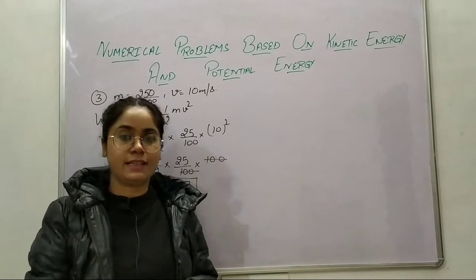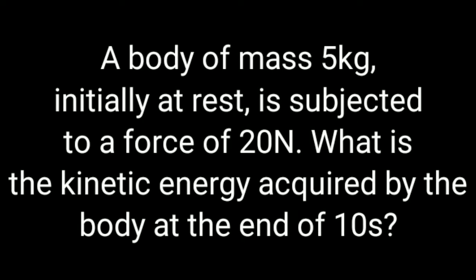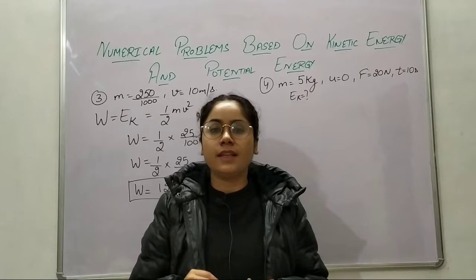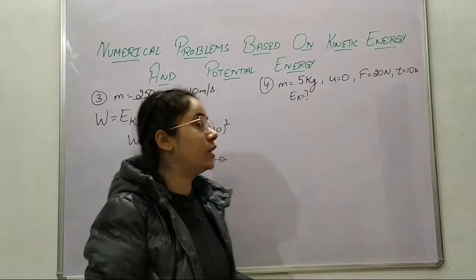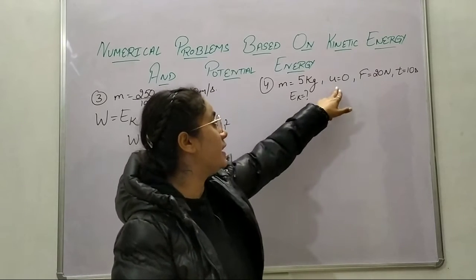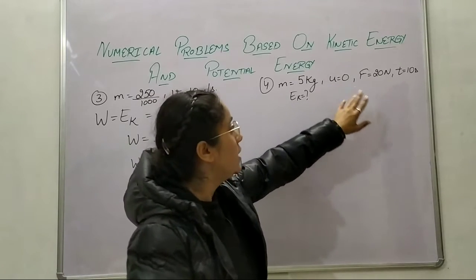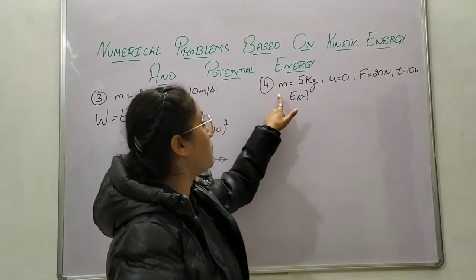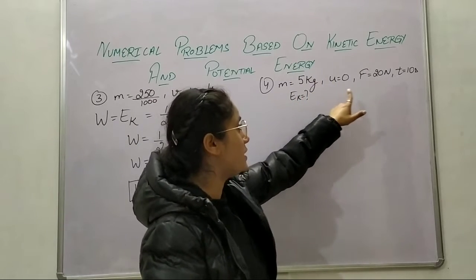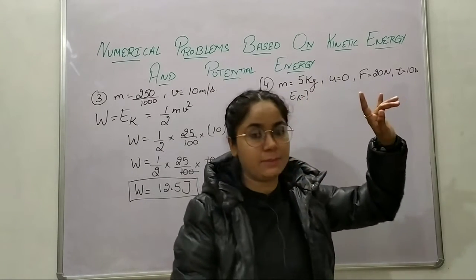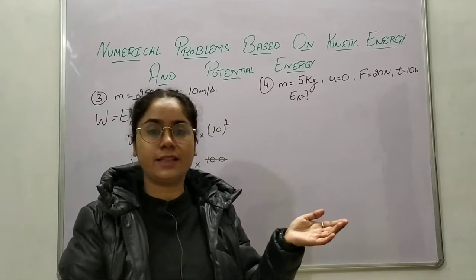Now it's time for the next problem. A body of mass 5 kilograms initially at rest is subjected to a force of 20 newtons. What is the kinetic energy acquired by the body at the end of 10 seconds? Since the object is initially at rest, the initial velocity is 0. We are given mass, initial velocity, force, and time, and we need to find the kinetic energy.